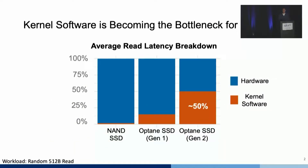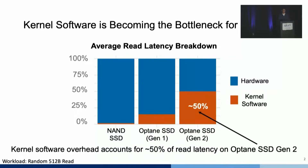With new storage technology like 3D Crosspoint, storage devices are getting much faster. As a result, kernel software is becoming the bottleneck for storage. Looking at the breakdown of average latency of a random 512-byte read, we can see that a higher percentage of time is spent on kernel software when the storage device is faster. Storage kernel software overhead accounts for around 50% of read latency on the second generation of Optane SSD.